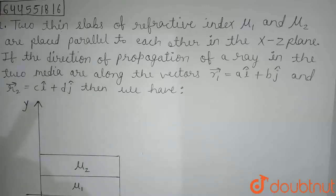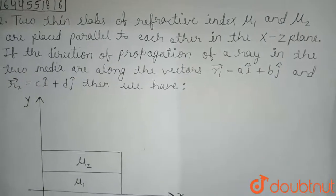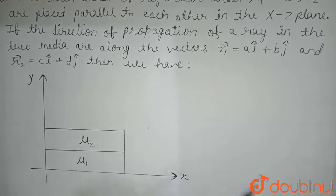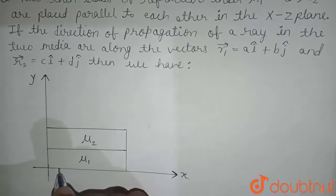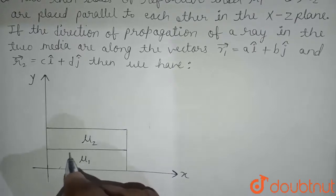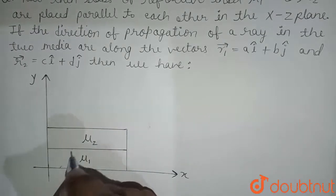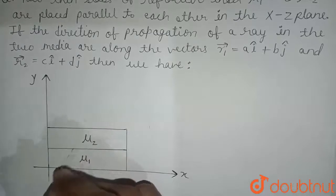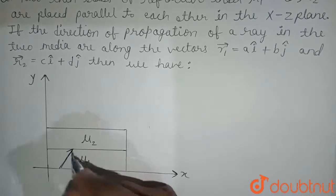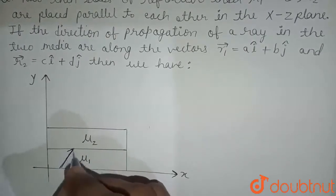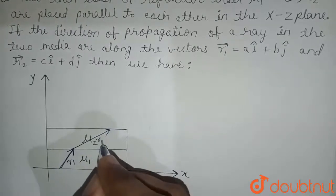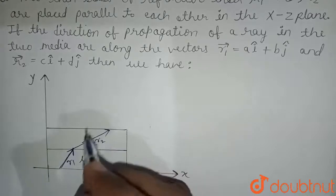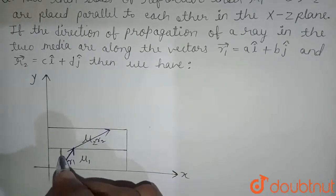So this is the diagram. Firstly, it is given that vector r₁ and vector r₂. Let this vector be r₁ and this vector be r₂.